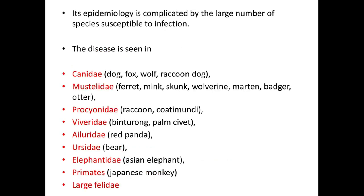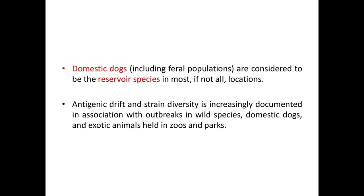The epidemiology of canine distemper is complicated by the large number of species susceptible to infection. The disease is seen in a wide range of species like Canidae, large Felidae, primates, Viverridae, Mustelidae, etc. Domestic dogs, including feral populations, are considered to be the reservoir species in most locations.